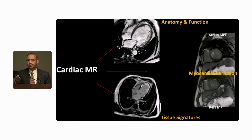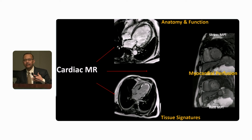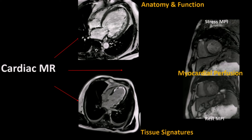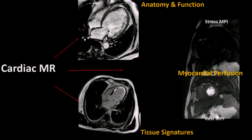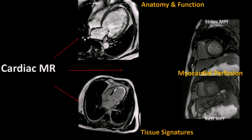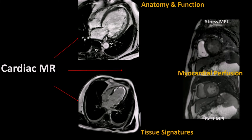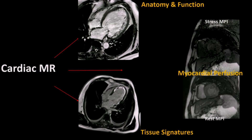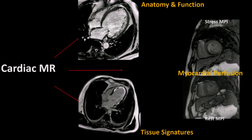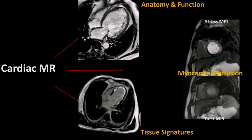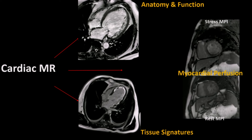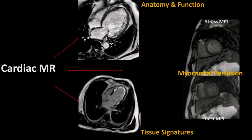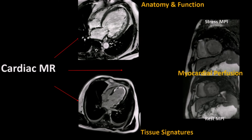CMR becomes a one-stop shop. It's not that echo doesn't have a role or nuclear doesn't have a role, but you can get a lot of things. Here is the stress part and the rest part. You can figure out whether it is ischemic or non-ischemic based on whether somebody has an ischemic defect or not. Here you can see a big defect in the sub-endocardial region in one coronary artery — and that is the rest myocardial perfusion. How good CMR is compared to nuclear or echo techniques is still a matter of debate.